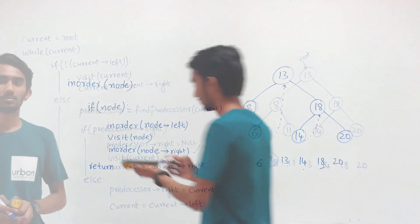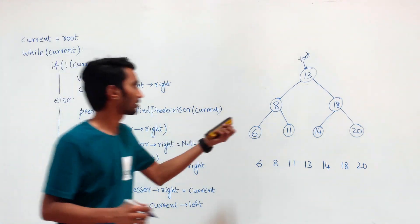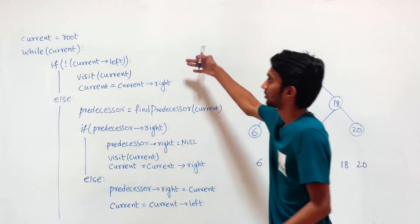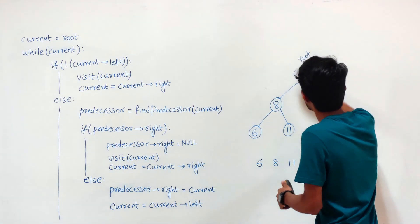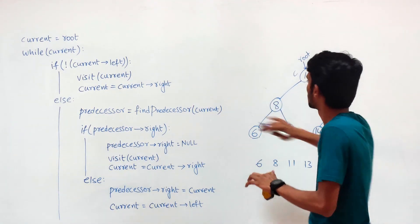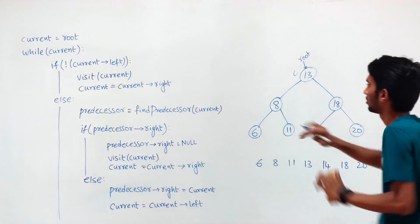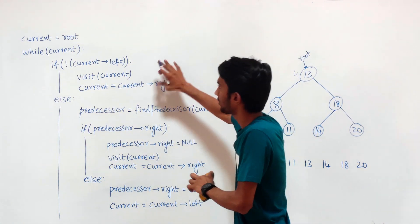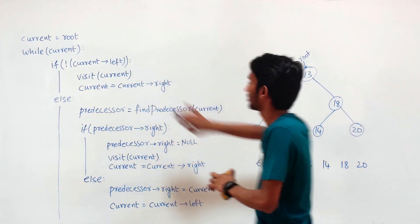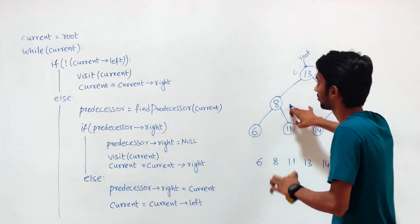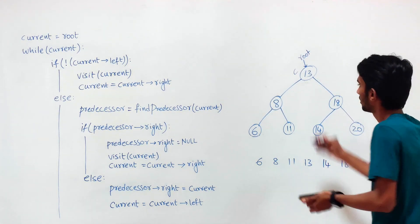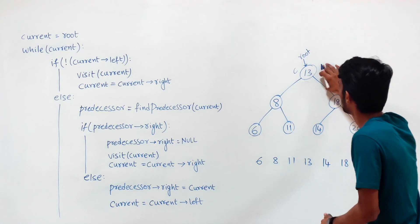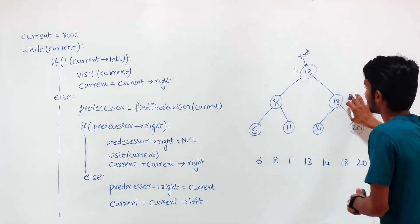Let's understand the algorithm by examining an example. We have a pointer called 'current' that initially points to the root. While current still exists, we traverse the entire tree. If current's left does not exist, we simply visit the current node and move current to the right subtree.